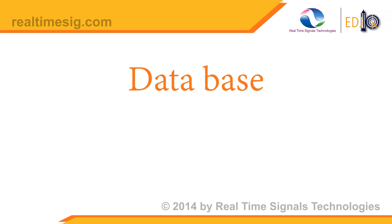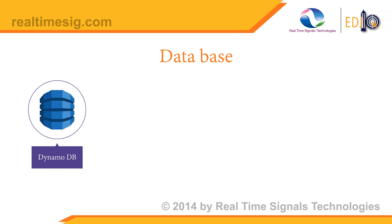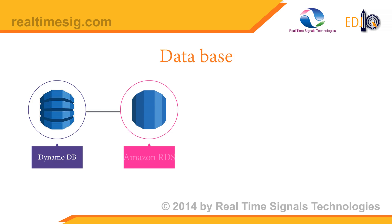Under databases, DynamoDB — Amazon DynamoDB is a key-value and document database that delivers single-digit millisecond performance at any scale. DynamoDB can handle more than 10 trillion requests per day and support peaks of more than 20 million requests per second. RDS — Amazon Relational Database Service — provides cost-efficient and resizable capacity while automating time-consuming administration tasks such as hardware provisioning, database setup, patching, and backups, freeing you to focus on your applications.